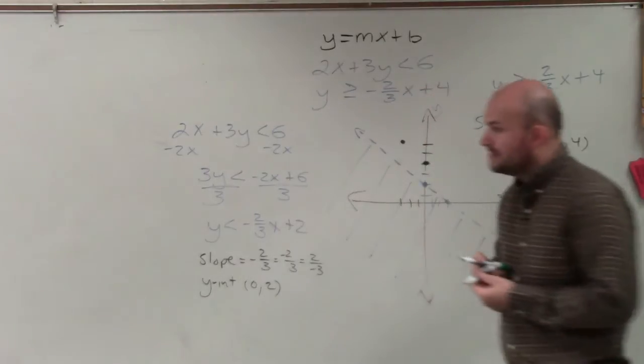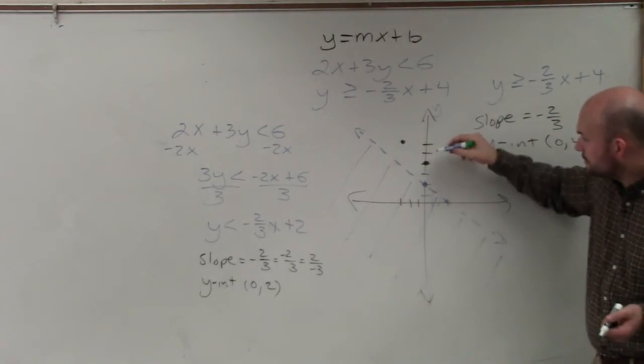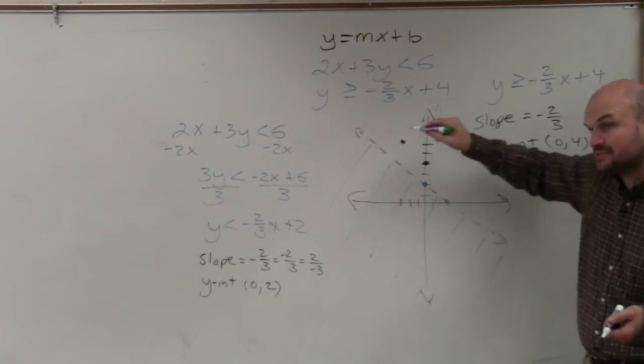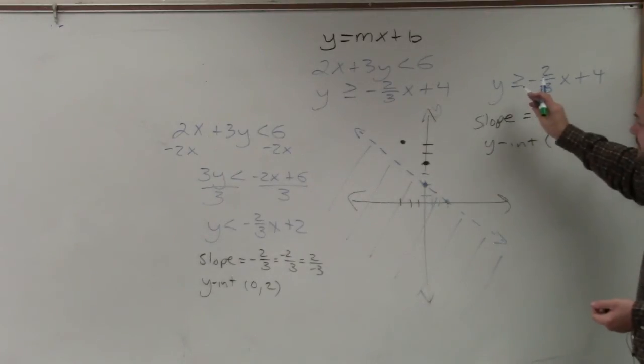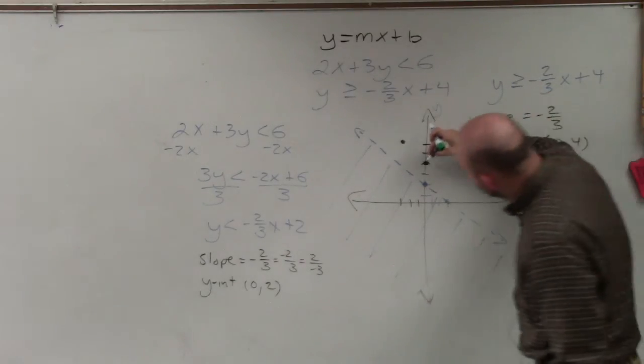But what I want you guys to notice is that the slopes are the same. It doesn't matter if you go down and over to the right or up and to the left when it's negative. But this is a greater than or equal to, so therefore that's going to be a solid line.